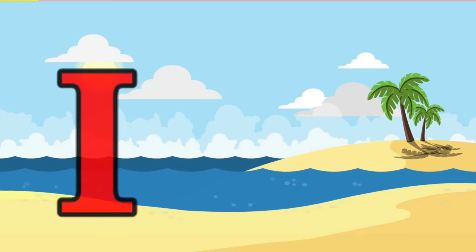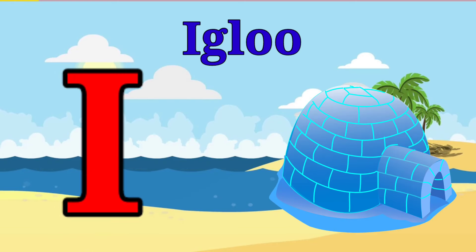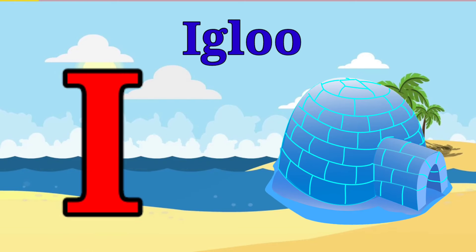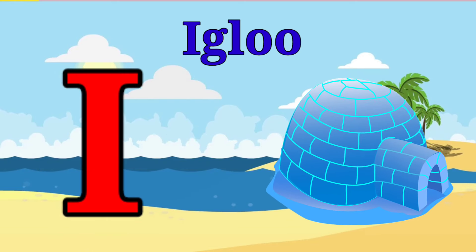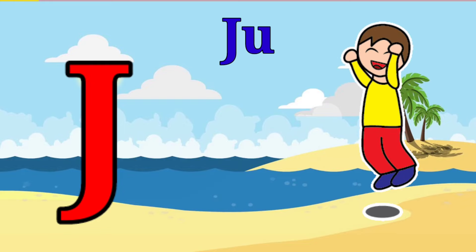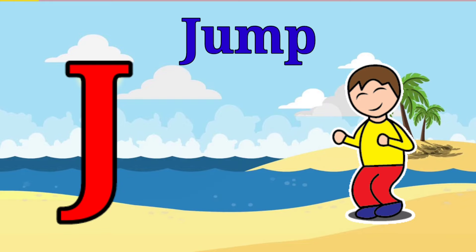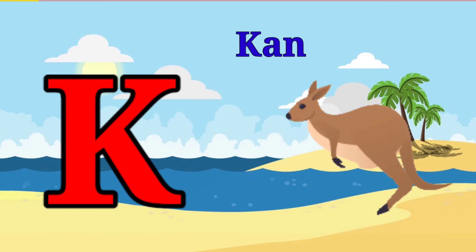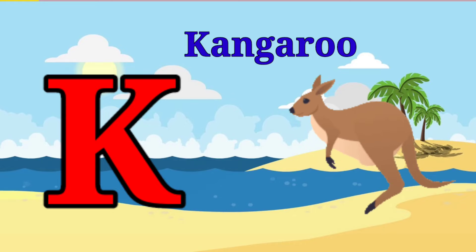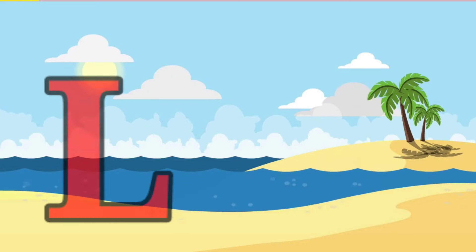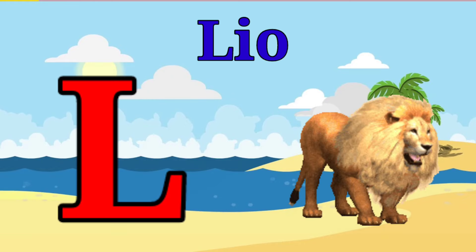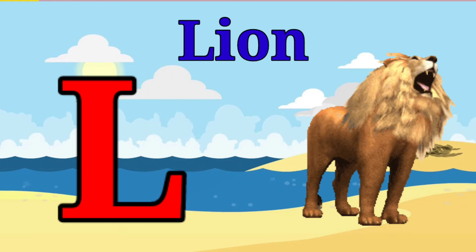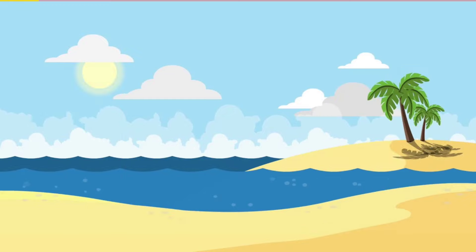I is for igloo, i-i-igloo. J is for jump, j-j-jump. K is for kangaroo, k-k-kangaroo. L is for lion, l-l-lion.